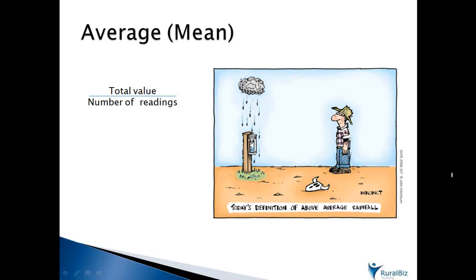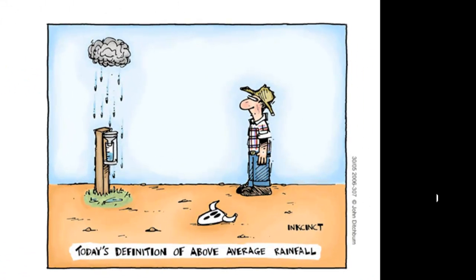Let's start by looking at what we mean by average. An average is simply the total of a number of figures divided by how many figures you had in your group. It's probably the value that we tend to think of when we are trying to describe a typical value. What we know, though, is that averages can be really misleading.